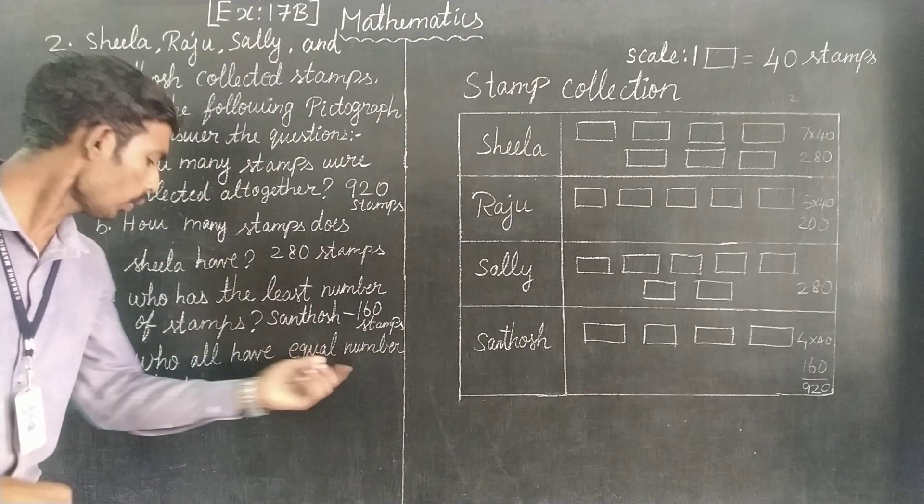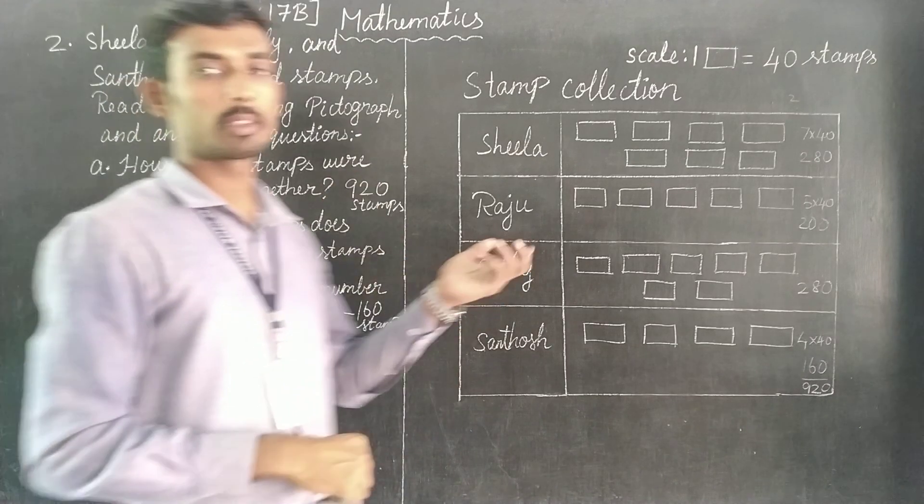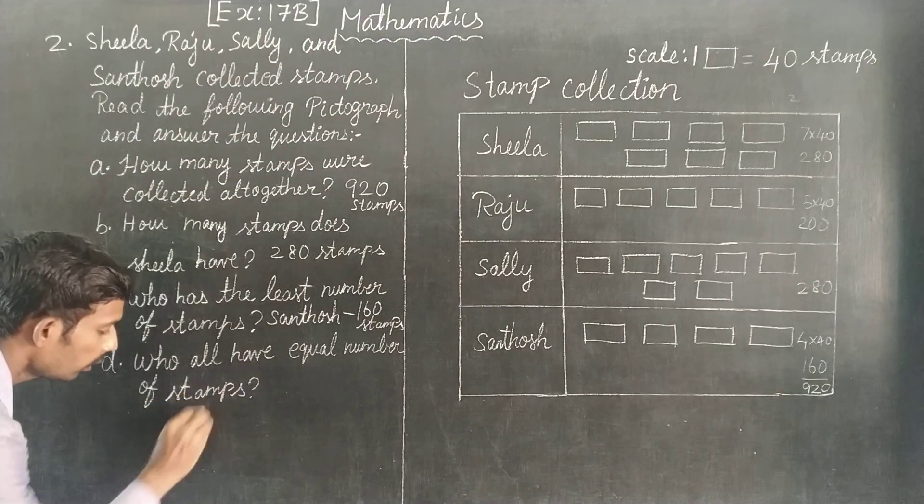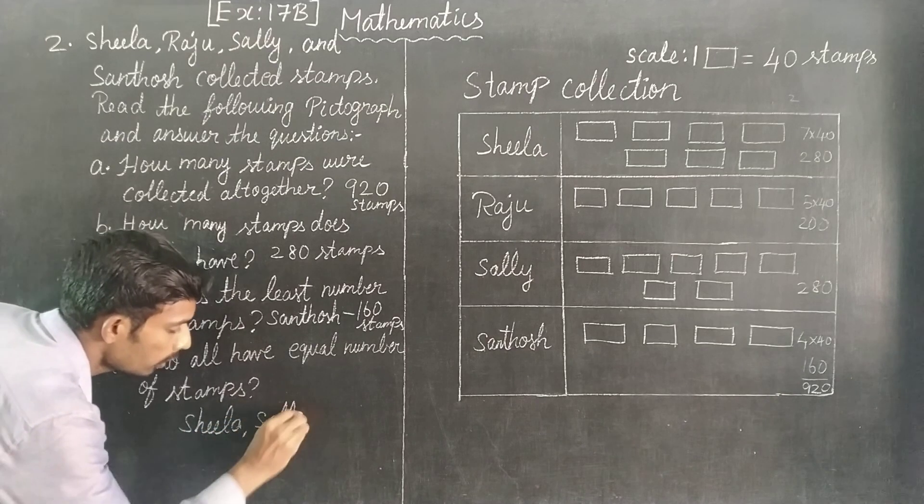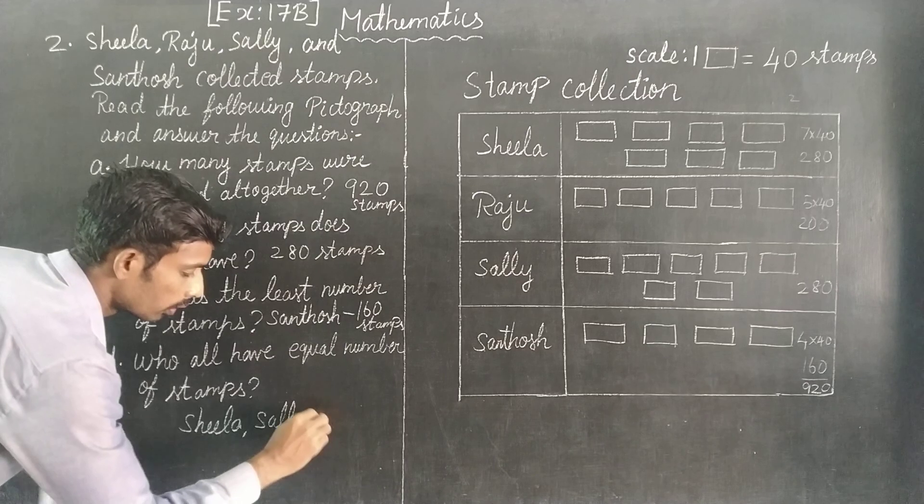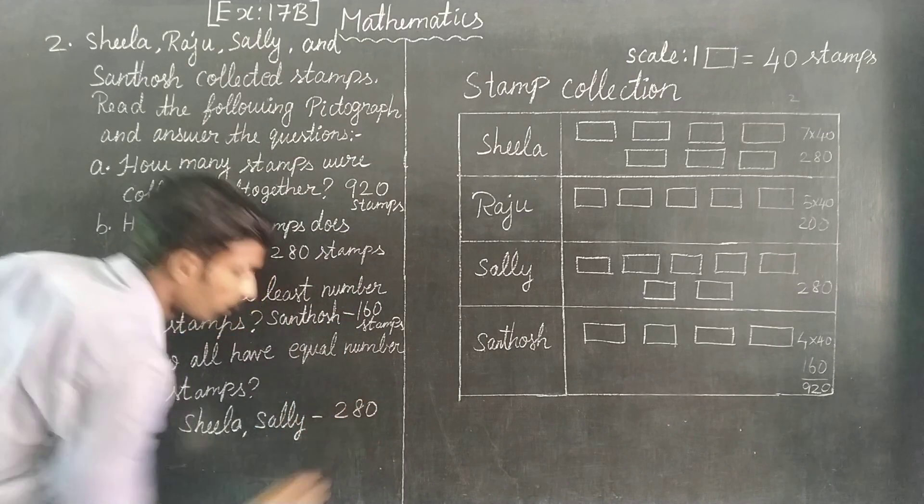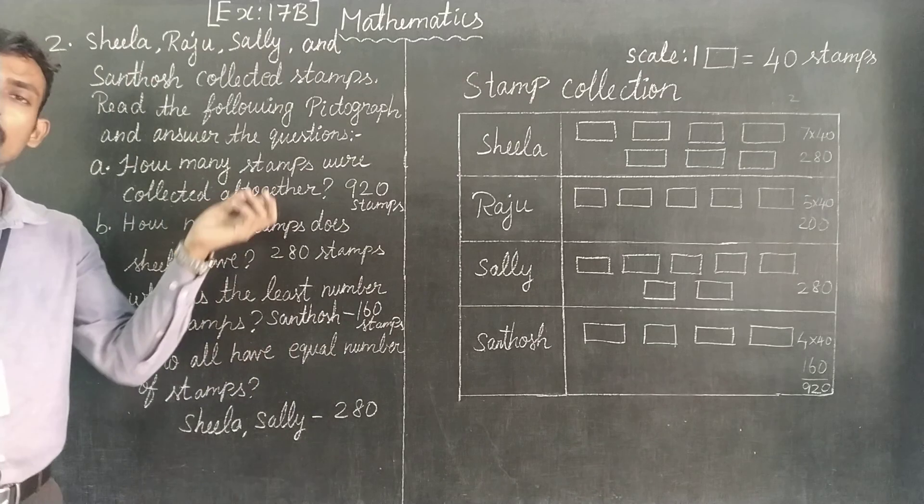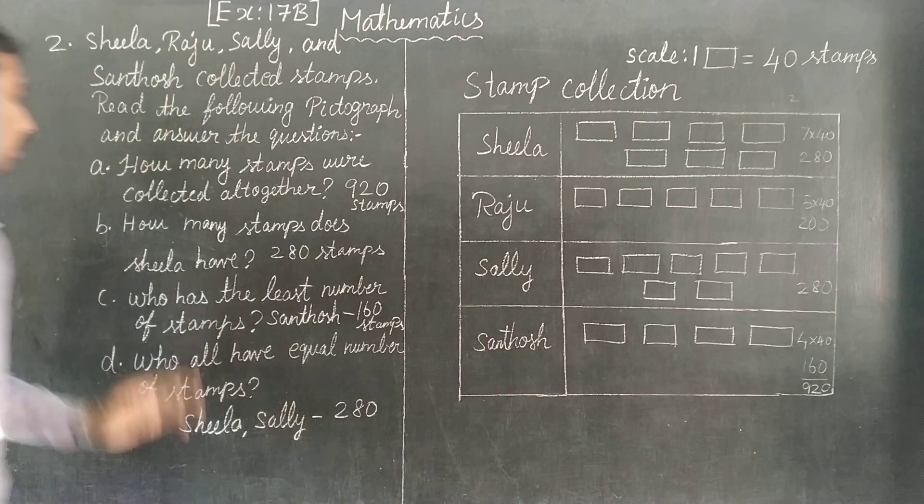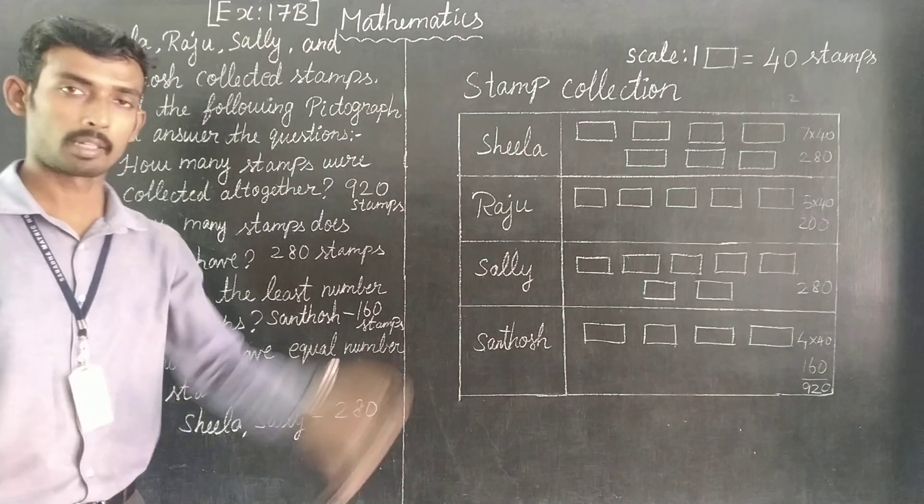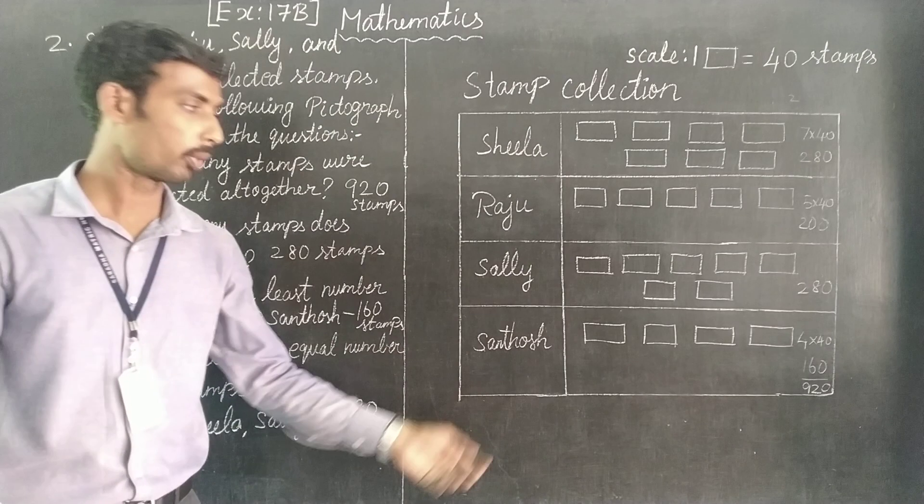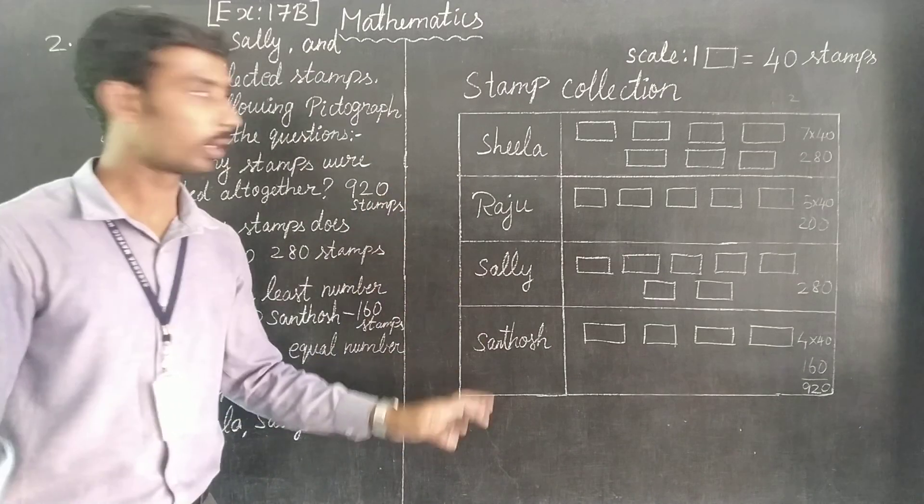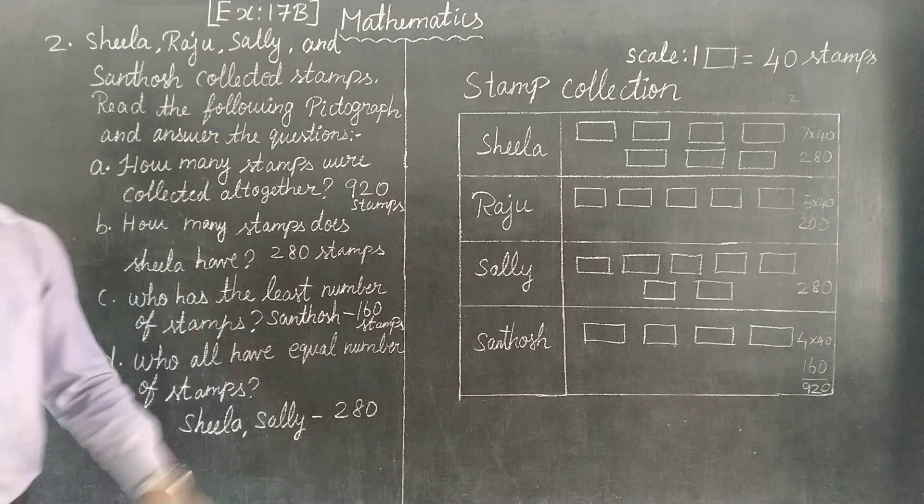Who all have equal number of stamps? So you will find the same number of stamps. Sheela and Sally both have equal stamps - Sheela and Sally. Total are equal, 280 each. So this is the answer. We can get the picture graph answers.